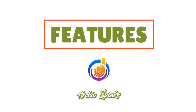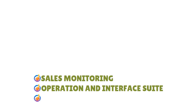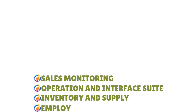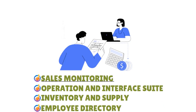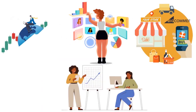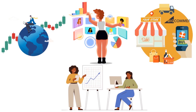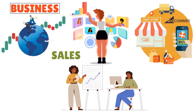Let's talk about the features you can expect within Unicentor. These include sales monitoring, operation and interface suite, inventory and supply, and employee directory. The sales feature in the Unicentor POS system is all about payments, orders, and orders of items against inventory and stock availability. You are constantly balancing your inflows and outflows of inventory, which makes it easy to monitor stock as well as sales in your business.